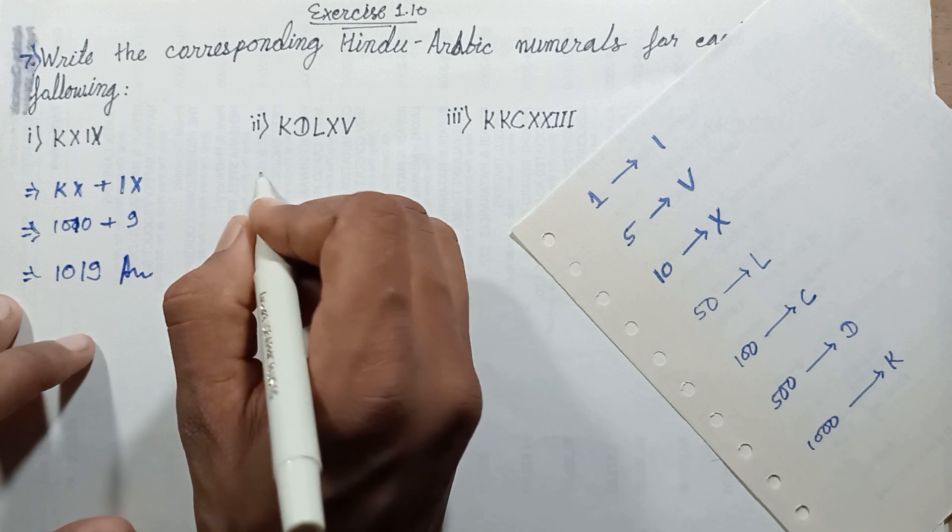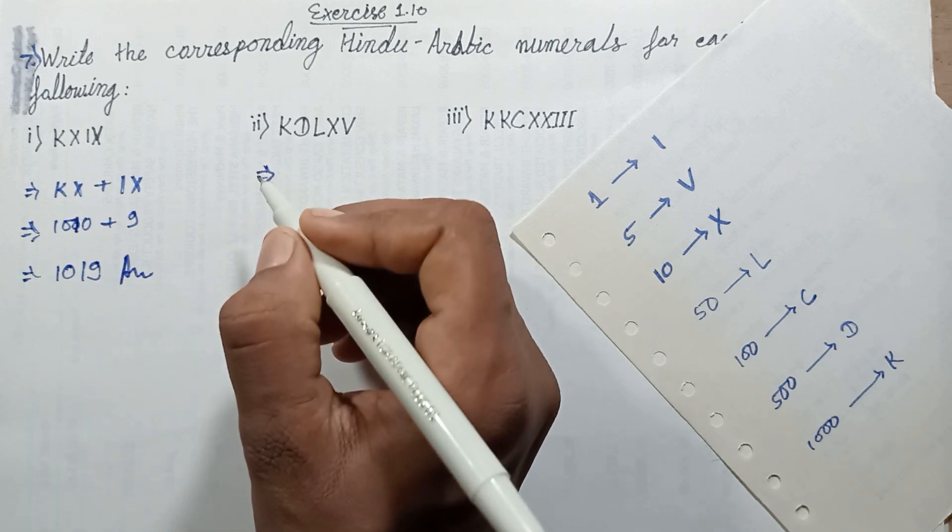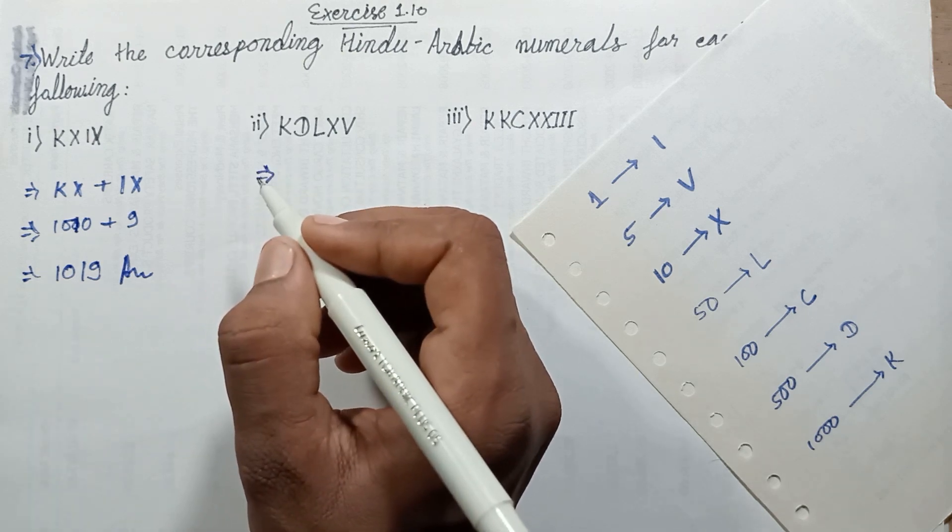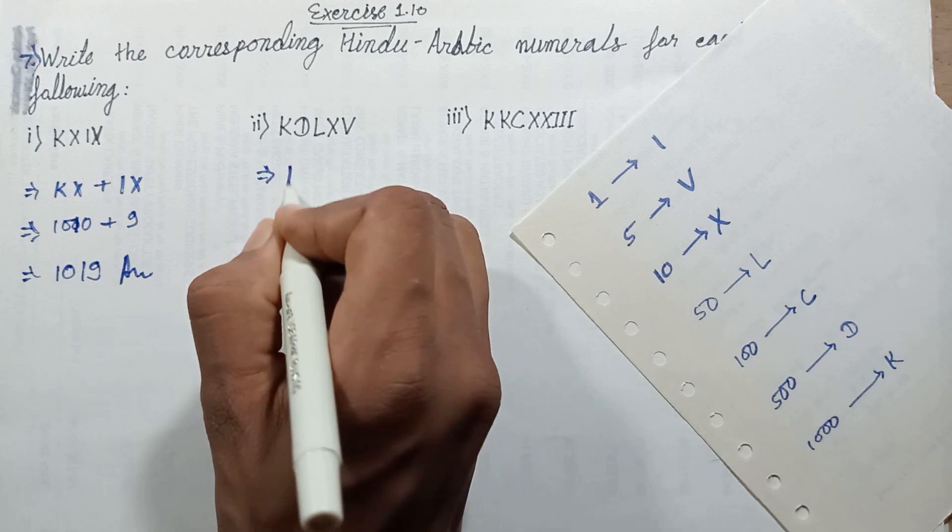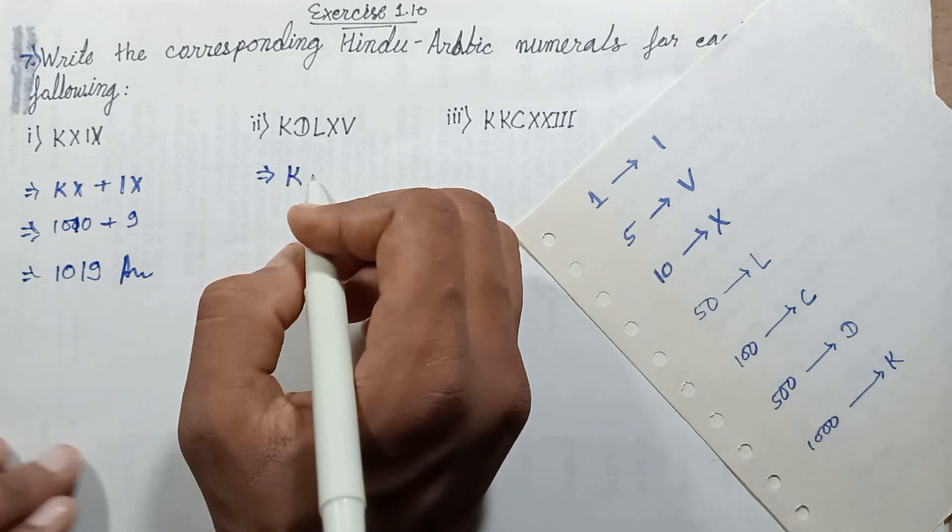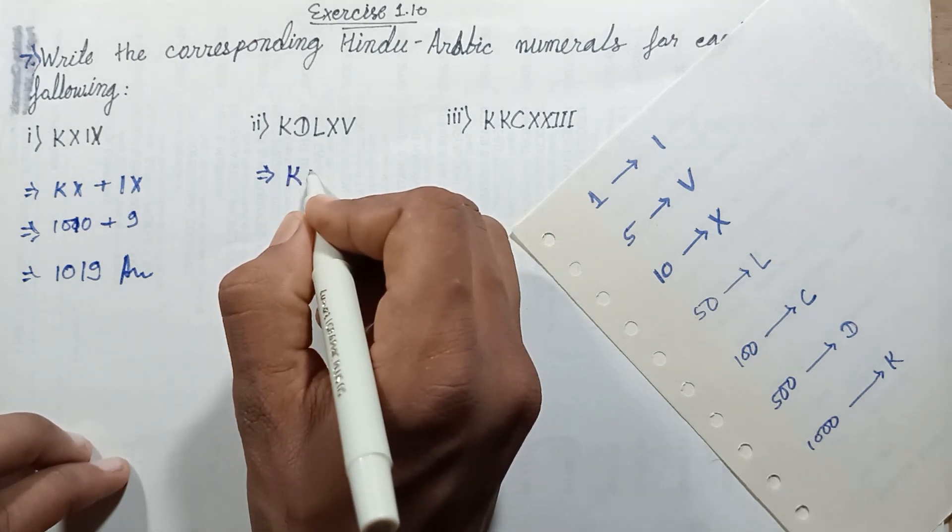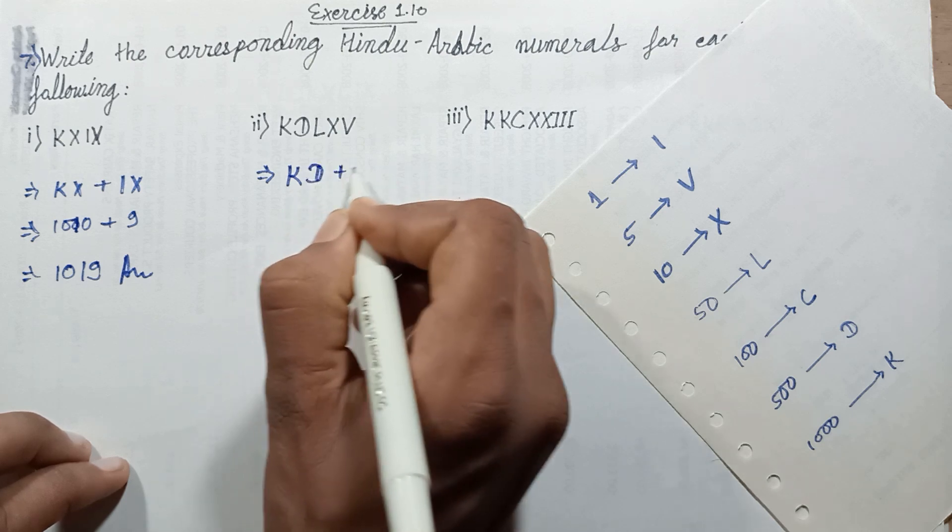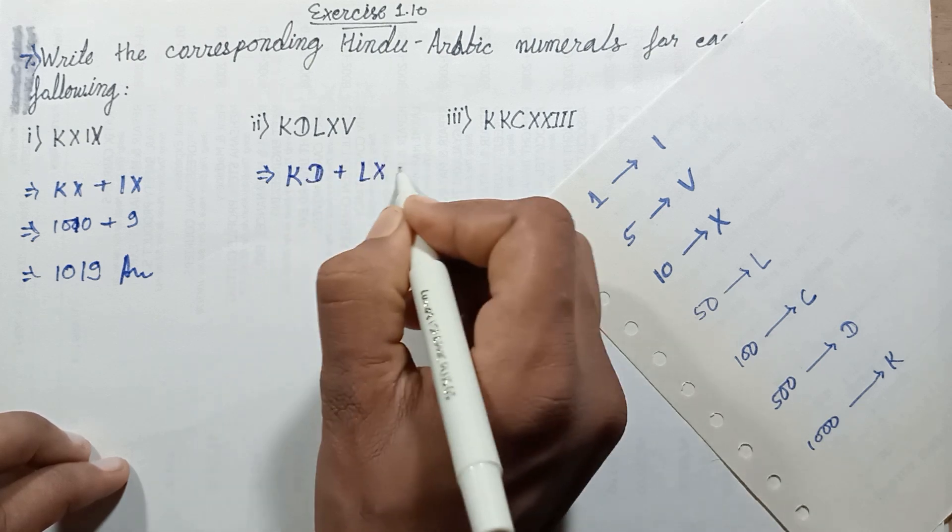Second number question. This Roman numeral, write them in expanded form: KD, plus LX, plus V.